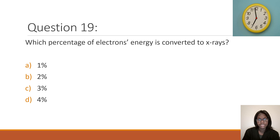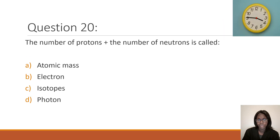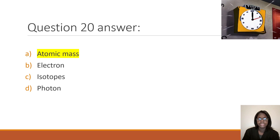Question 19: Which percentage of electrons' energy is converted to x-rays? 1%, 2%, 3%, or 4%? The correct answer is 1% — in fact, less than 1% of electrons' energy is converted to x-rays. Question 20: The number of protons plus the number of neutrons is called atomic mass, electron, isotopes, or photon? The correct answer is atomic mass.